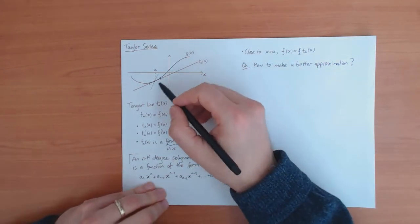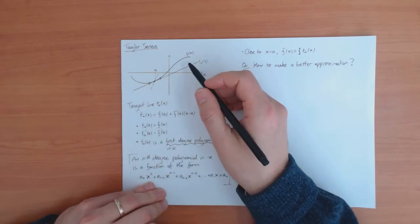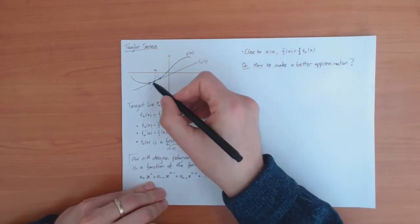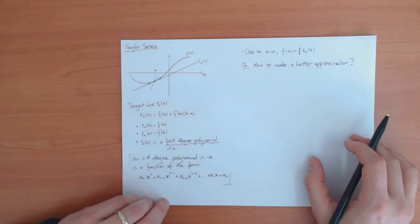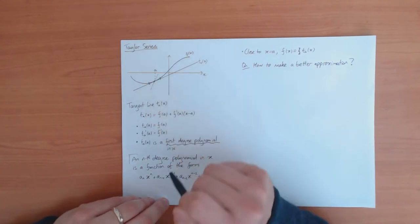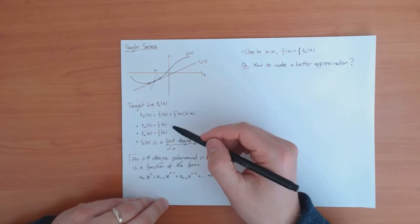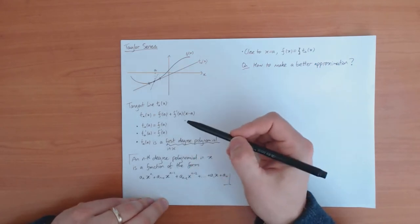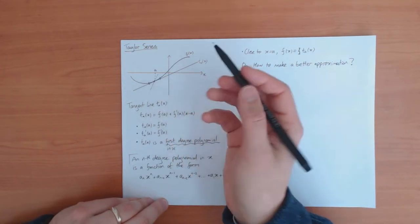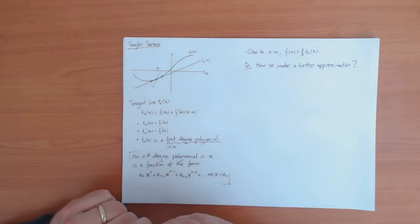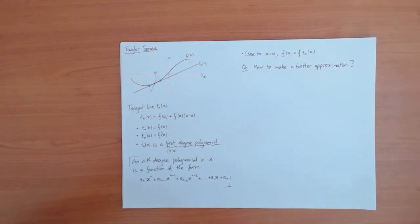However, the second derivatives of the tangent line and the function f are different, because the tangent line is a straight line and therefore its second derivative is zero, while in general the second derivative of f(x) will not be zero. So one way to improve the approximation is to add something which makes not only the value and first derivative the same, but also the second derivative the same — and if we do that, we should get a better approximation to f.